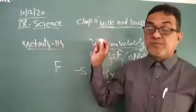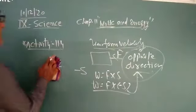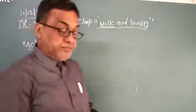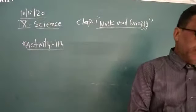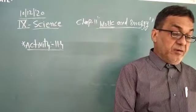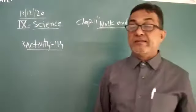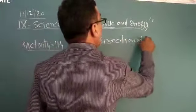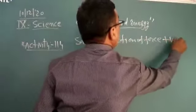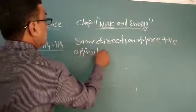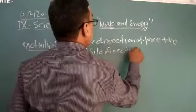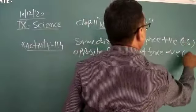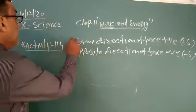Now Activity Number 1.14. In this activity, we can consider work done by forces acting on the object and which ones are doing positive or negative work. In the same direction of force it becomes positive, and in the opposite direction of force it becomes negative. Here S is positive, here S is negative. These are the two conditions.